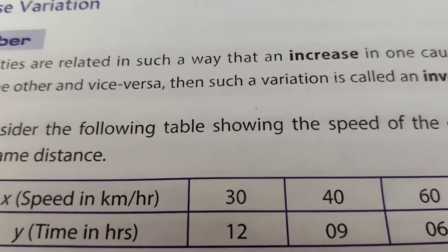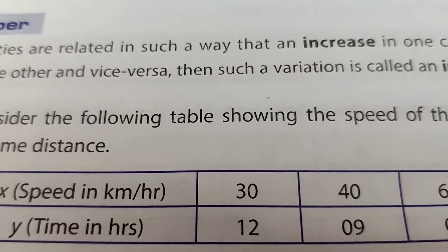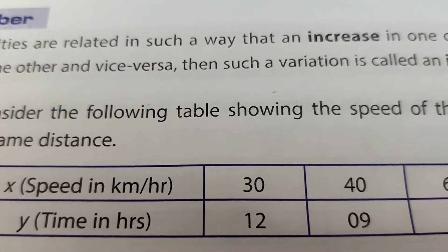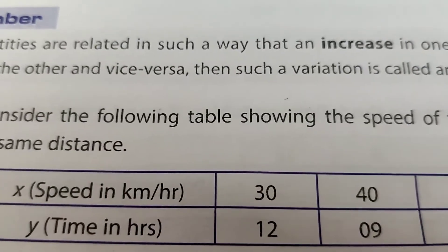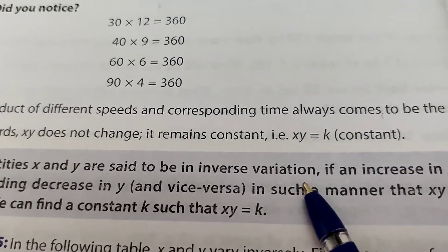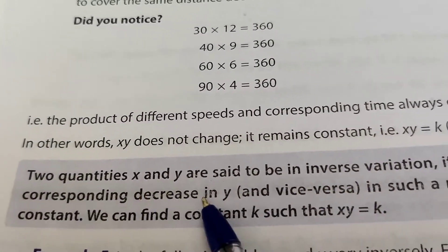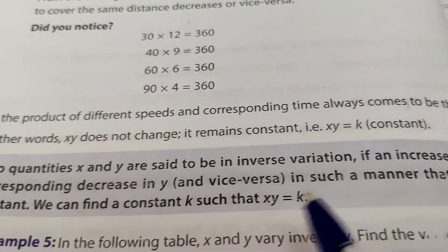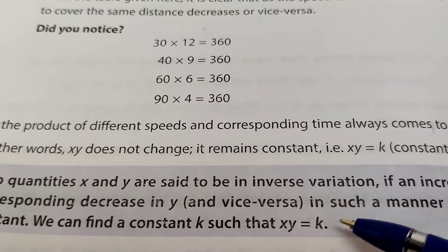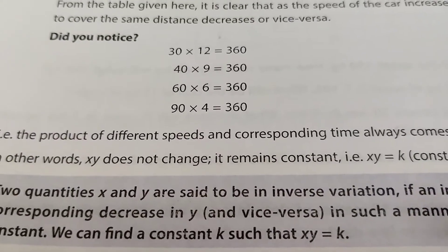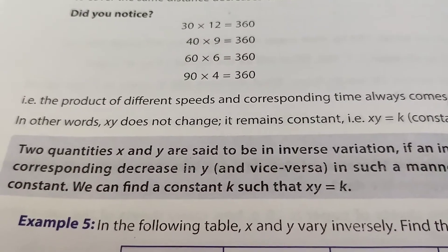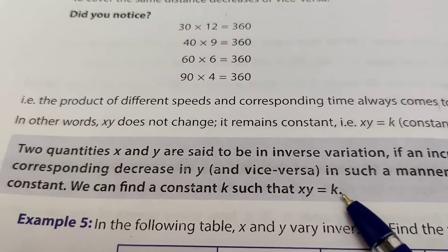If more people work, they finish the work in fewer days — this is inverse variation. In this variation, two quantities x and y are said to be in inverse variation if an increase in x causes a corresponding decrease in y such that the product x times y remains constant. In direct variation, the ratio remains constant; in inverse variation, the product remains constant.